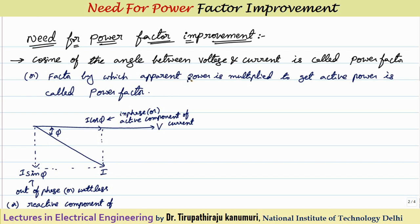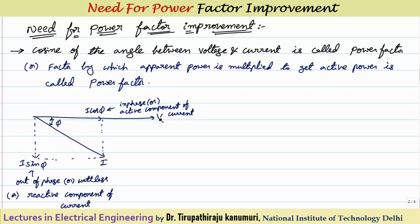Before proceeding to the second definition and why it is called power factor, let us make some observations based on the phasor diagram. Taking voltage V and current I, the current I can be resolved into two components. One component will be in phase with the voltage — that is I cos phi — because this is the adjacent component. This is called the in-phase or active component of the current, which is the component mainly responsible for supplying the active power.